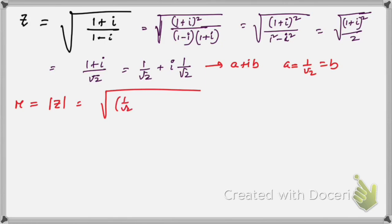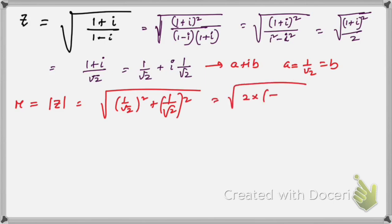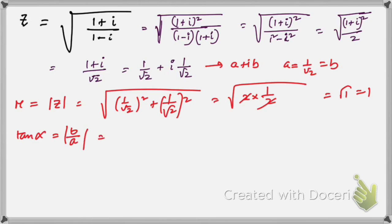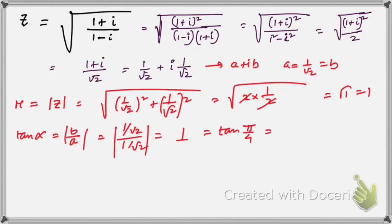The modulus of z is |z| = √(a² + b²) = √((1/√2)² + (1/√2)²) = √(1/2 + 1/2) = √1 = 1. To find the argument, tan α = |b/a| = (1/√2)/(1/√2) = 1. We know tan(π/4) = 1, so α = π/4.